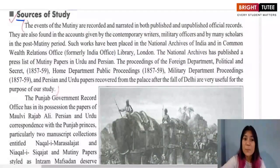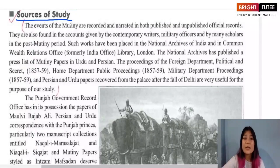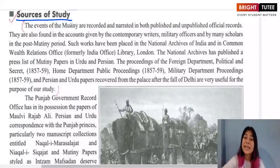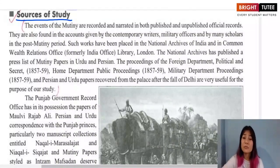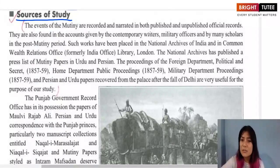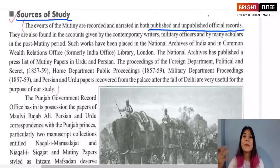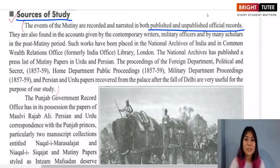Now let's look at the sources from which we can get information about the Revolt of 1857 — from where historians who have written about this event obtain their materials. There are various sources for writing about the Revolt of 1857, consisting of both published and unpublished records. Some are published by the government or institutions, while others are kept in libraries and archives — both are important.